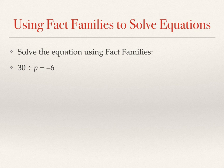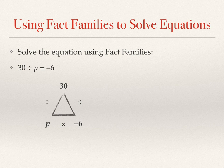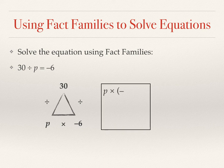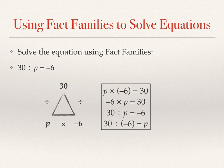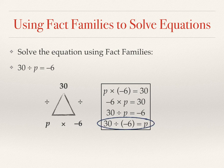Here we have a division equation. And same thing, we'll use our fact triangle with multiplication at the bottom and the two division signs along the side. 30 is going to go up at the top. And when we write our four equations, we can start with the multiplication again. P times negative 6 equals 30. Negative 6 times p equals 30. And then our two division equations. Which one is the most direct for solving for p? And what is the solution?